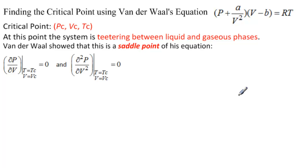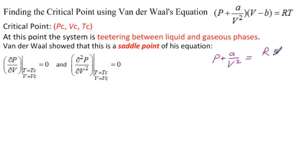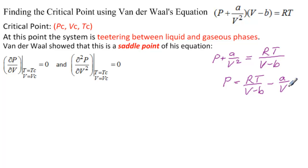Solving Van der Waal's equation for P: P plus A over V squared equals RT divided by V minus B, so P equals RT over V minus B, minus A over V squared. Notice that V, which we're going to take the derivative with respect to, appears in both terms.